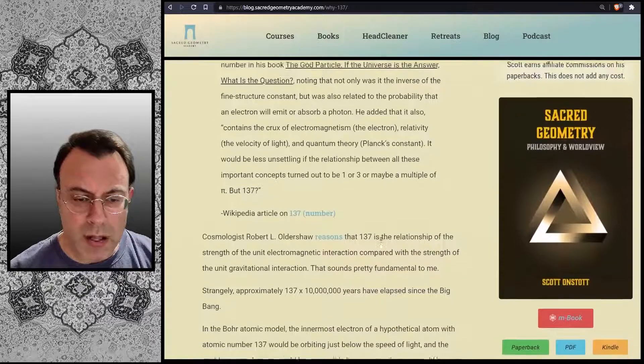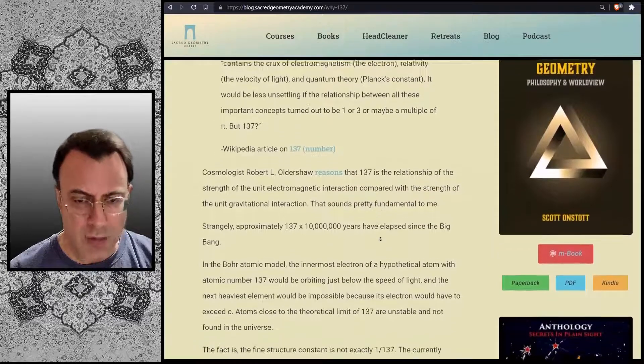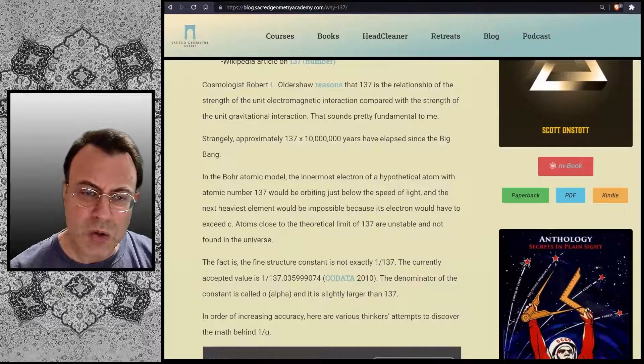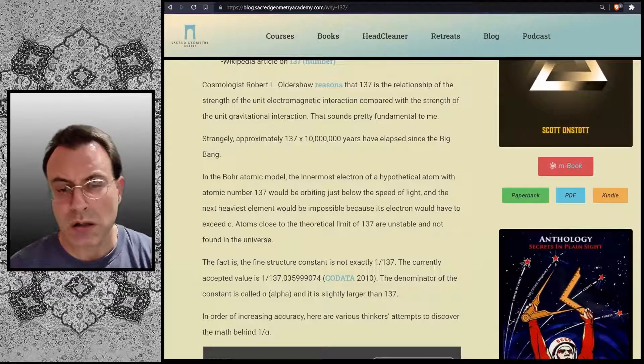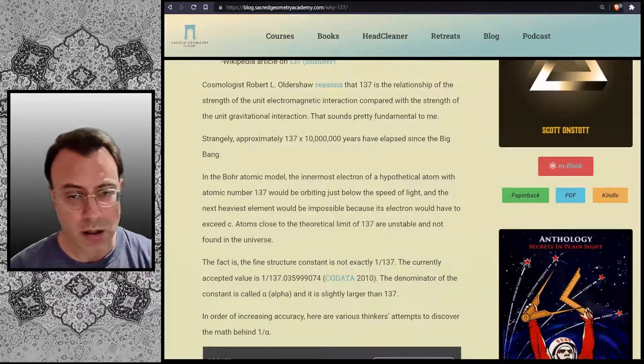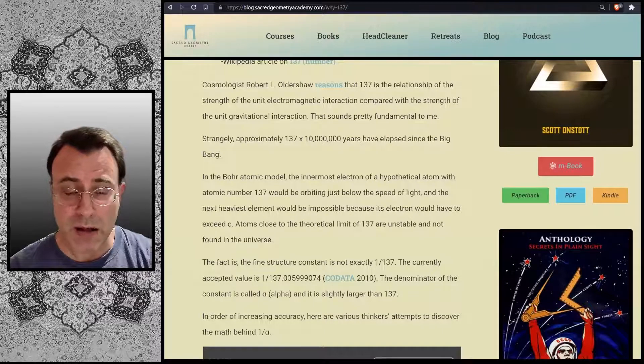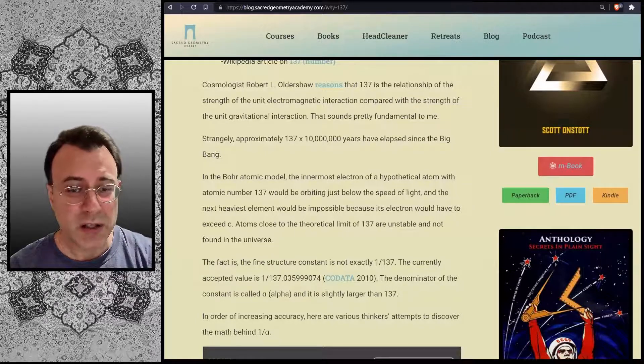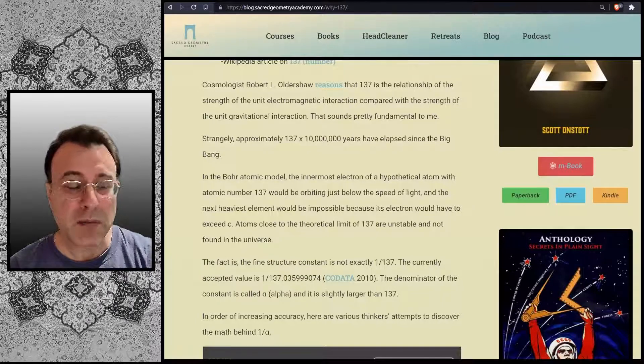Cosmologist Robert L. Oldershaw reasons that 137 is the relationship of the strength of the unit electromagnetic interaction compared with the strength of the unit gravitational interaction. That sounds pretty fundamental to me. Strangely, approximately 137 times 10 million years have elapsed since the Big Bang.